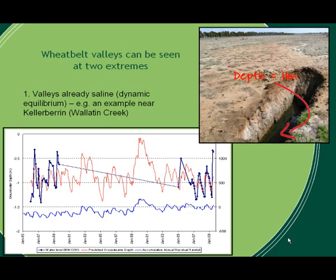Let's look at the two extremes of wheat belt valleys and the example of salinity. Here's an example from near Calabarian in a catchment called Wallotton Creek. This bore is located very close to the picture in the top right-hand side. Depth to water table ranges between half a metre and a metre and a half from the surface. We've monitored a bore near here since the mid to early 1980s. The diagram in the bottom left is a plot of water tables over time and how rainfall trends have changed.